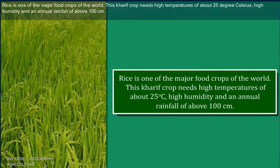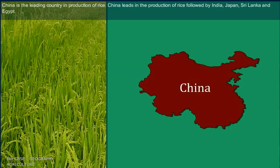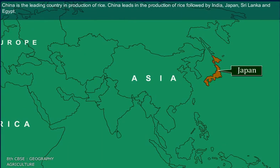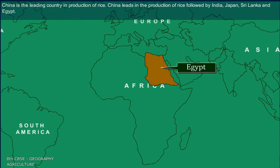Rice is one of the major food crops of the world. This kharif crop needs high temperatures of about 25 degrees Celsius, high humidity, and an annual rainfall of about 100 cm. China is the leading country in production of rice, followed by India, Japan, Sri Lanka, and Egypt.